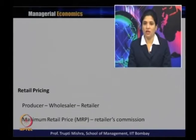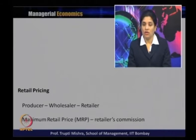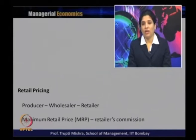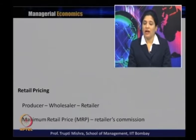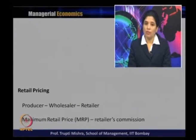Then we have retail pricing, which differs from producer or wholesale pricing. The value chain works as follows: the producer sells to the wholesaler, the wholesaler sells to the retailer, and the retailer sells to the consumer. At each stage some margin is added. The final price the consumer pays is the Maximum Retail Price, or MRP, which includes the retailer's commission. So retail pricing is the price at which the consumer buys the product from the retailer.